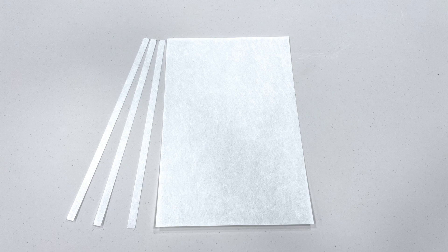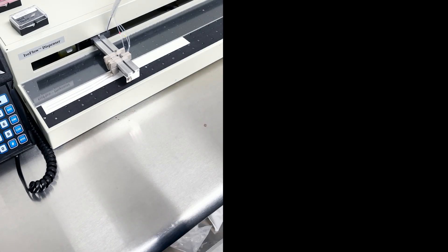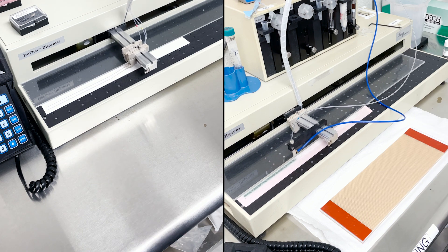Select your membrane and conjugate pad of choice from the starter kit. Cut your conjugate pad 10 millimeters in width. On the membrane, dispense your protein or antibody and on the conjugate pad, dispense your gold conjugate.